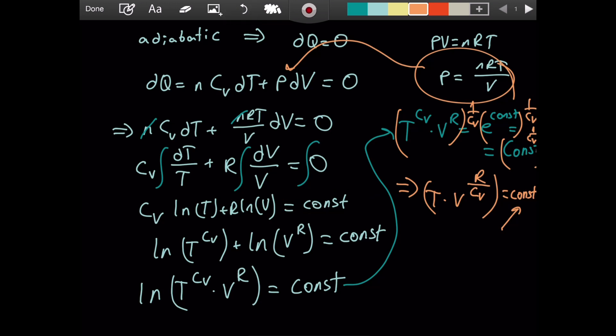We're getting closer to the end, but there are a couple of things we could still do. Instead of T times V, we substitute using the ideal gas expression PV over nR. We have V to the power of R over Cv equaling a constant. Notice that n and R are constants, so we can just toss them to the other side and include them in the constant. We have PV, so I'm just going to add one here as the exponent of V.